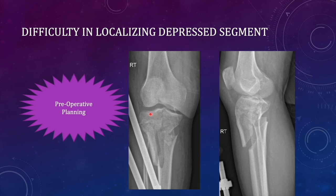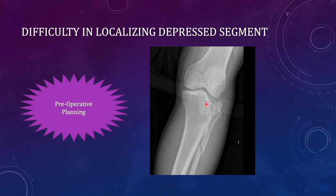In this radiograph you can see some depression — there are double subcondylar lines visible on the lateral condyle, which means there is definitely a depressed lateral condyle fragment, but we are not sure whether it is in the anterior or posterior part. In the AP view you can see there are multiple depressed fragments. Overall there are three depressed fragments, but we need a CT to better identify them.